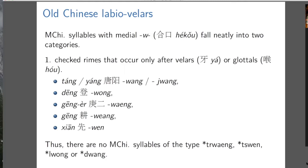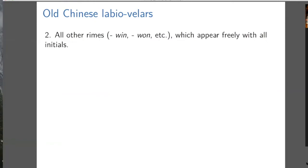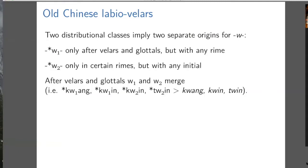There are no Middle Chinese syllables of the types on screen — which makes the same point that acute initials don't occur with these rhymes. The second class is all other rhymes, which appear freely with all initials. These two distributional classes imply two different origins for W. I'll call them W1 — which only occurs after velars and glottals but with any rhyme — and W2 — which only occurs in certain rhymes but with any initial.